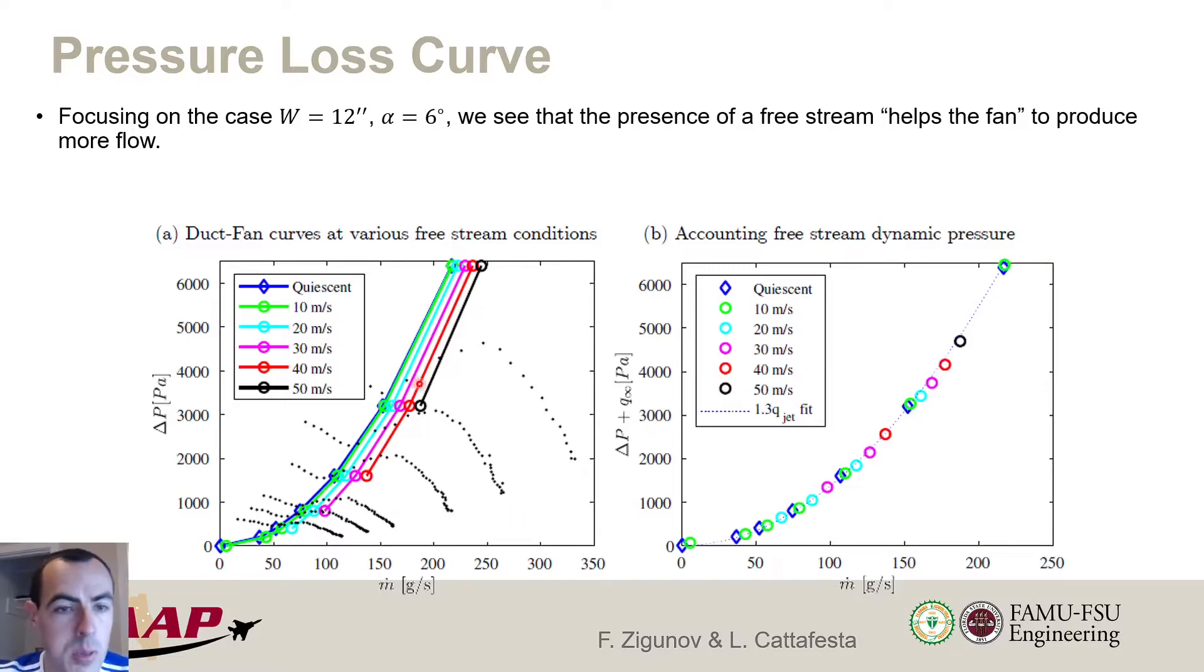Okay, so for these specific conditions, each one of these data points here is a simulation. And each one of these black points is measurements of a physical fan sold by Schubeler with a 69 millimeter diameter. And we see here that as we increase the free stream velocity, so from quiescent to 50 meters per second, we see that we get more and more mass flow rate. It turns out that the free stream is helping the fan operate. It's alleviating the pressure gain required by the fan.